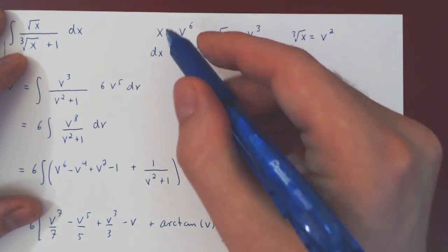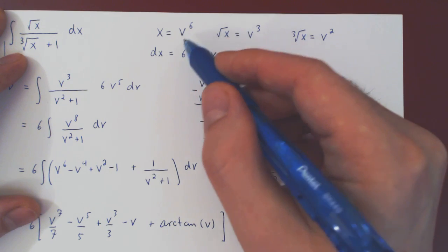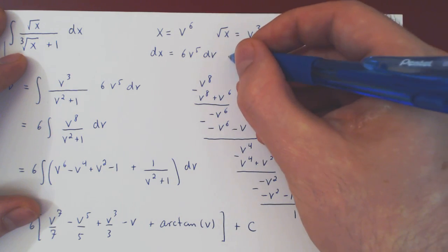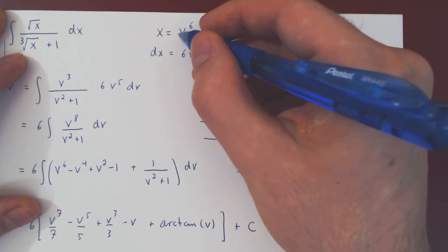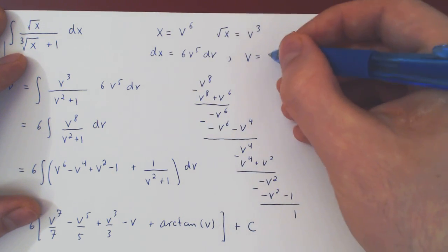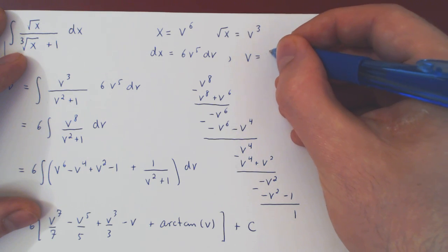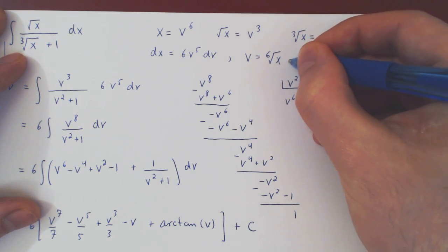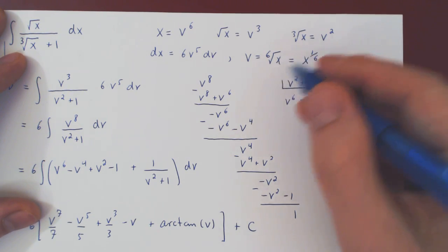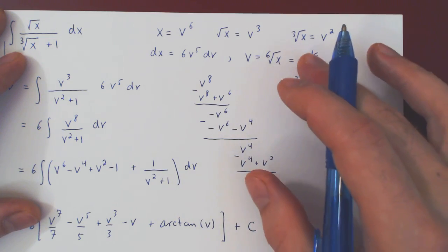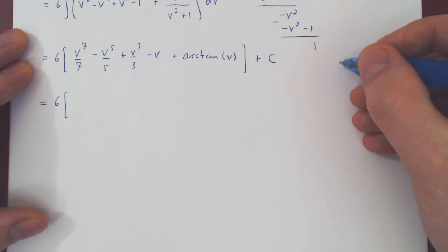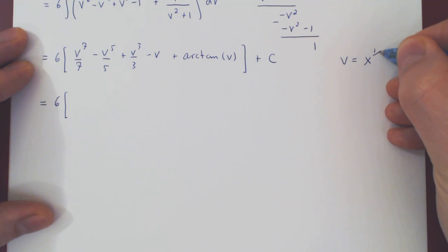And if you think about it, well if x is v to the 6, you want to isolate for v as a function of x. Take the sixth root on both sides. The sixth root of v to the 6 will cancel and you'll have v, which will be the sixth root of x, which you can write in this form, or if you prefer in this form. And I'll go with this form, but either one is perfectly fine. So v is x to the power of 1 over 6.